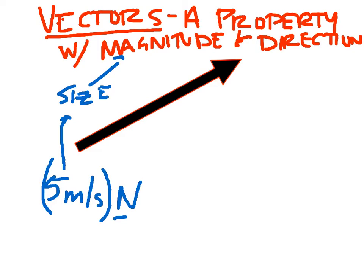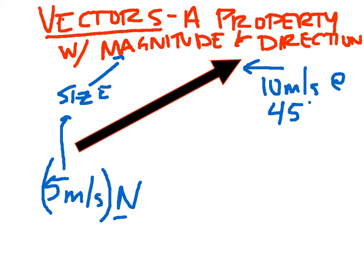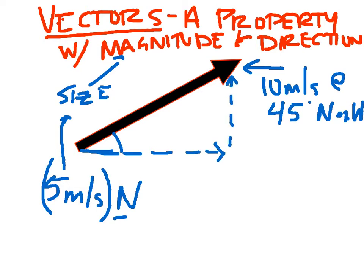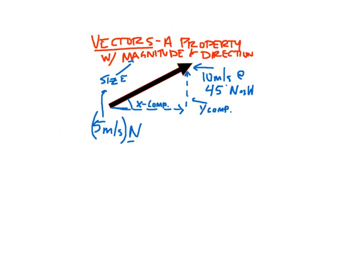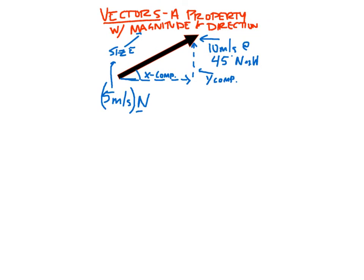The hard part about vectors comes in when we do right angle geometry. Let's say this is our vector — 10 meters per second at 45 degrees. If we look at it, that's 45 degrees north of west. That's everything we need for the direction of this vector. The thing we do with vectors that are not convenient is break them up into their x and y components — it makes them easier to add together. That's our x component, and that's our y component. To get these components, we do a little bit of trigonometry.